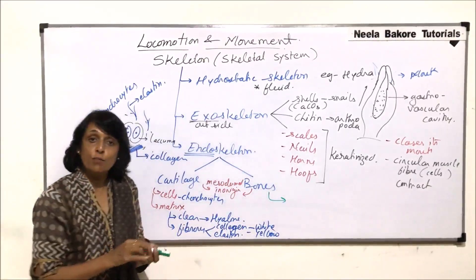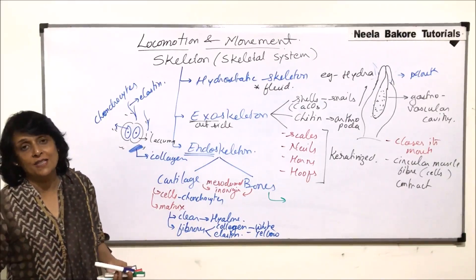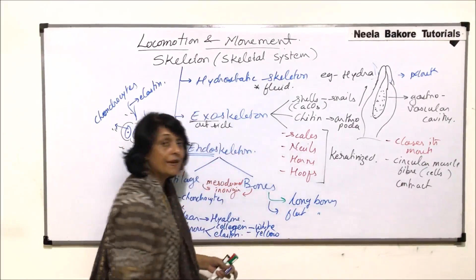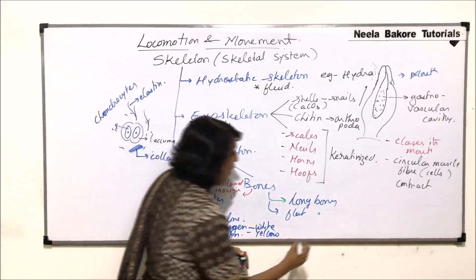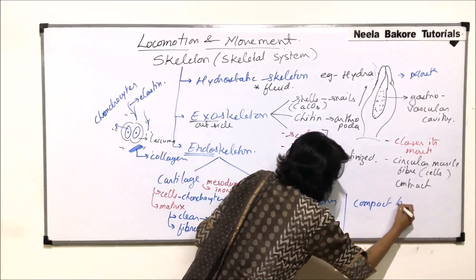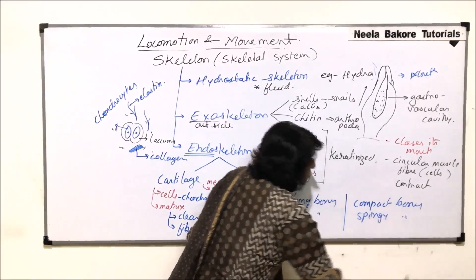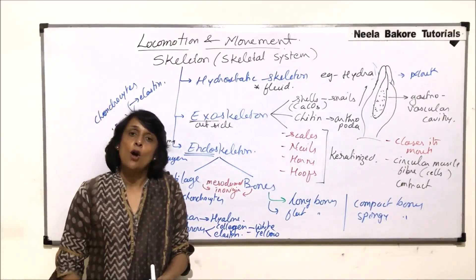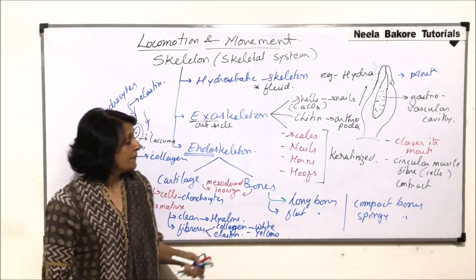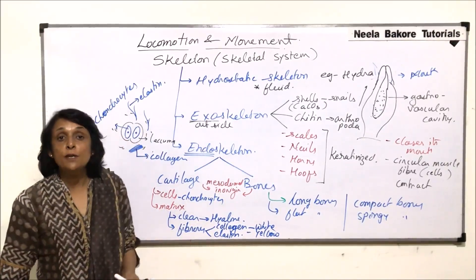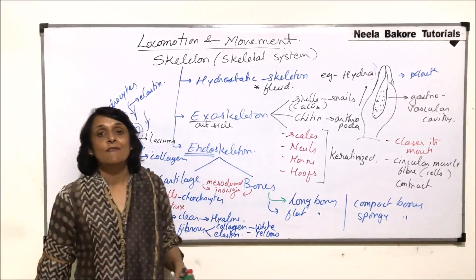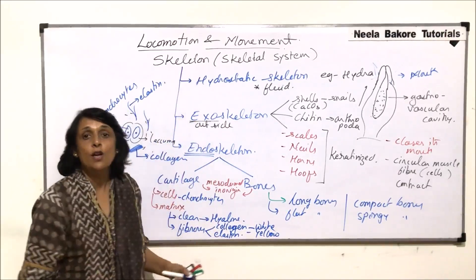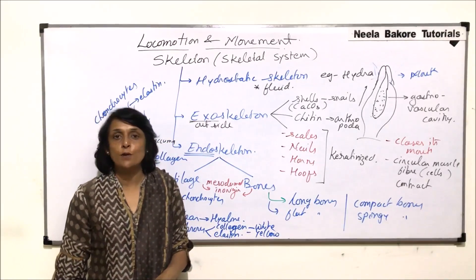When we talk of bones, we can classify them into various categories such as long bones and flat bones, or compact bones and spongy bones. Details of their structure — such as the haversian system — will be discussed in the tissue chapter. In this chapter, we will be talking about all different types of bones, where they are present, how they articulate with each other, and different types of joints — that is, the human skeletal system, which we will start from the next video.